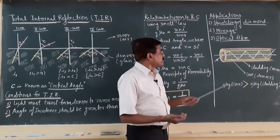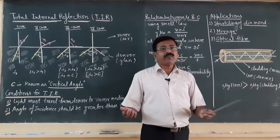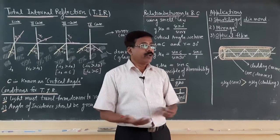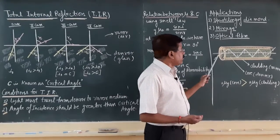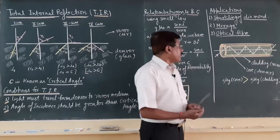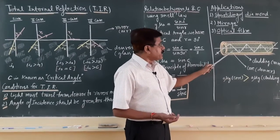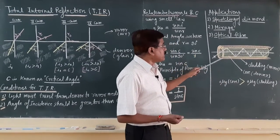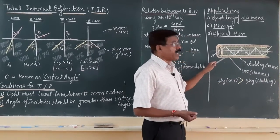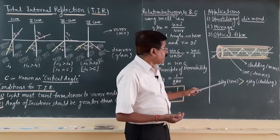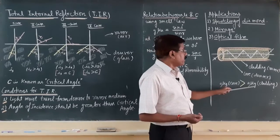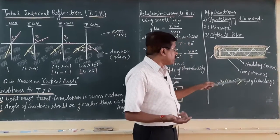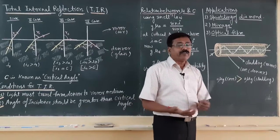Optical fiber is specifically highlighted here because it is widely used in communication, medicine, and entertainment. An optical fiber is a very fine thin wire made of glass. The inner part is called the core, made of glass, and the outer coating is also made of glass and is called the cladding. Both are made of glass, but the optical density of the core is greater than that of the cladding. This means the core is the denser medium and the cladding is the rarer medium, so the refractive index of the core is greater than that of the cladding.